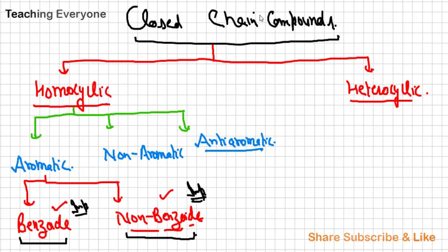This is benzoid and this is non-benzoid. Can you give the example of benzoid compounds? Naphthalene, anthracene. In naphthalene, two benzene rings; anthracene, there are three benzene rings. And there is also phenanthrene. This is also a three benzene ring compound. And what is the example of non-benzoid aromatic compounds?